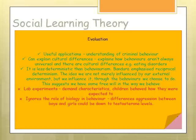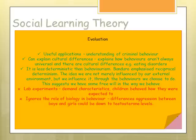Social learning theory has useful applications — it can help us understand criminal behaviour and eating disorders. For example, people might be more likely to copy thin female celebrities who are admired and seen to be rewarded. It can explain cultural differences, such as why Western cultures have higher rates of eating disorders than non-Western cultures, explaining why some behaviours aren't universal. It's less deterministic than behaviourism, suggesting we have some free will and control over whether we imitate behaviour.